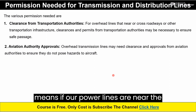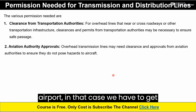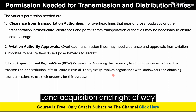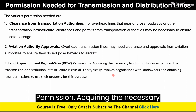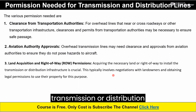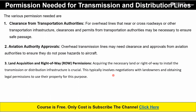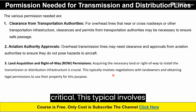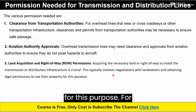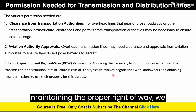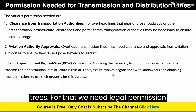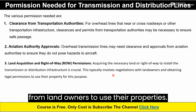That means if our power lines are near the airport, we have to get approval from the Aviation Authority. Third, Land Acquisition and Right-of-Way Permissions — securing the necessary land or right-of-way to install the transmission or distribution infrastructure is critical. This typically involves negotiation with landowners and obtaining legal permission to use their property. For maintaining the proper right-of-way, we sometimes need to cut down trees, for which we need legal permission from landowners.